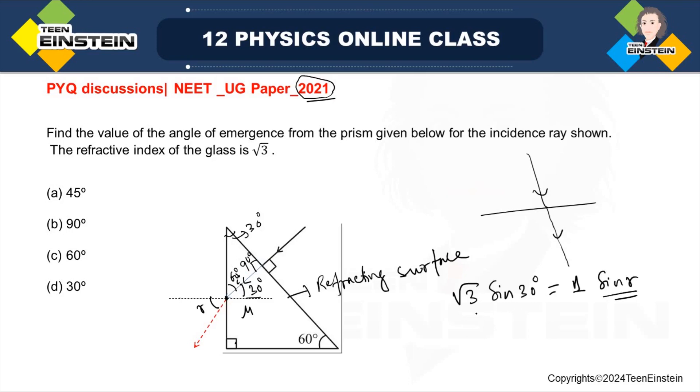So, I have to find out what is r. So, this will give you sine r is equal to root over 3 by 2. And you know sine 60 degree is equal to root over 3 by 2. Right? So, this implies r will be 60 degree. So, angle of emergence of the ray will be 60 degree from the prism. And option C is the correct answer for this question. Thank you.